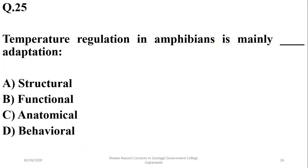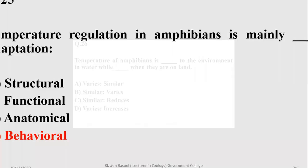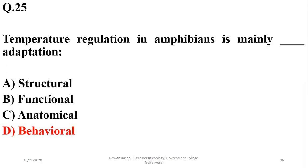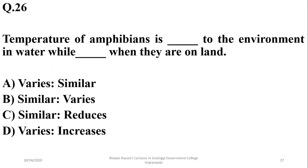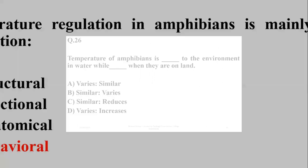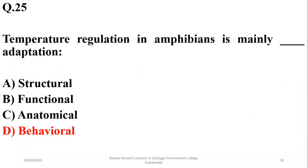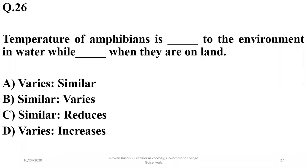Temperature regulation in amphibians is mainly a behavioral adaptation. Amphibians are cold-blooded animals and usually do not regulate their body temperature, but on terrestrial conditions they regulate it by changing their behavior. The temperature of an amphibian is similar to the environment when in aquatic conditions, while it varies when they are on land. The right option is B.